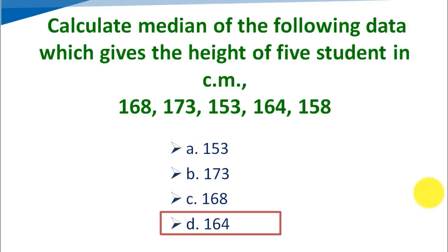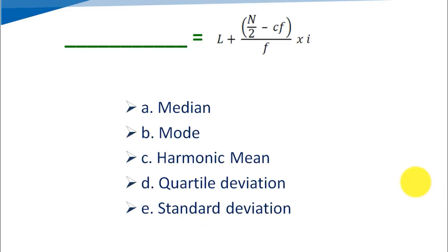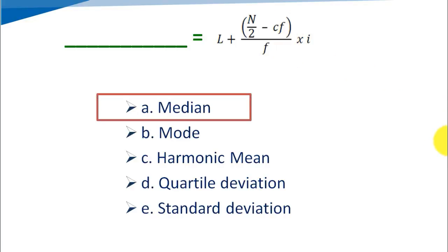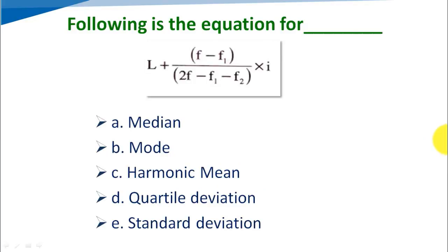The equation — blank = L + [(n/2 − cf) / f] × i — stands for which measure? Option A: median, Option B: mode, Option C: harmonic mean, Option D: quartile deviation, Option E: standard deviation. The correct answer is Option A, median.